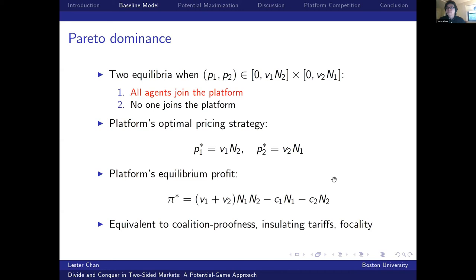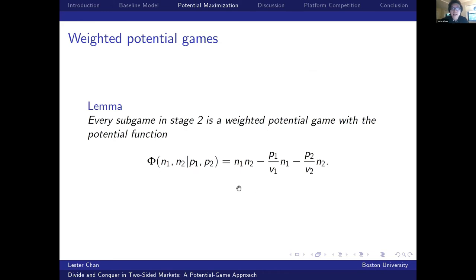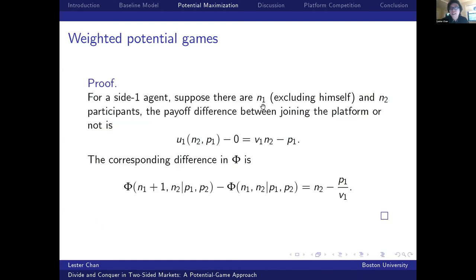Now let us analyze the same model under potential maximization. First, we show that every subgame in stage two is a weighted potential game with the potential function Φ given here. The proof is to verify that the function Φ defined here is indeed a potential function. For a side-one agent, suppose there are N1 side-one participants and N2 side-two participants.